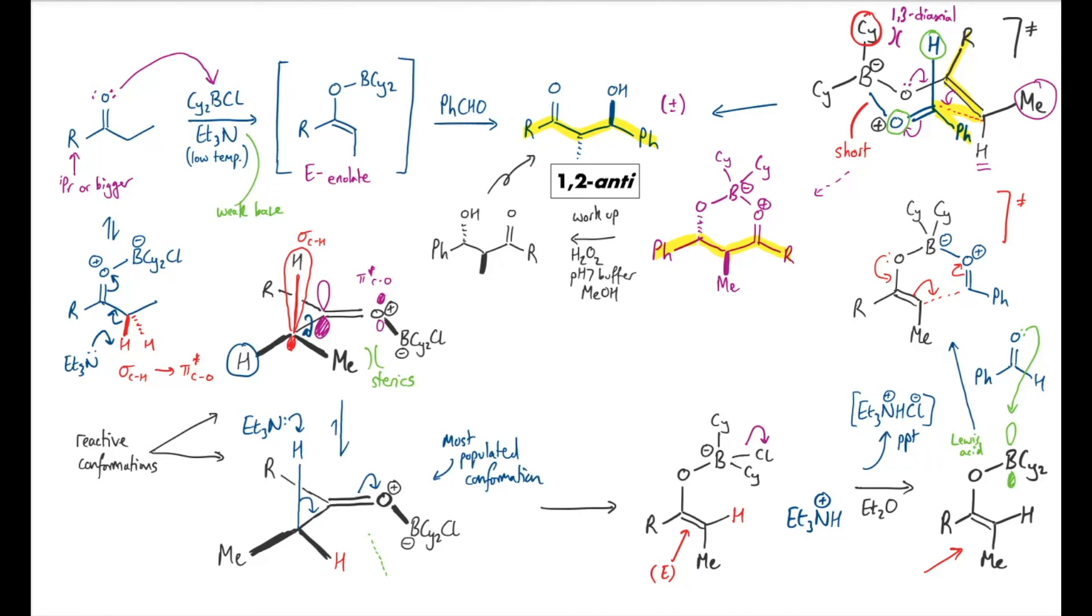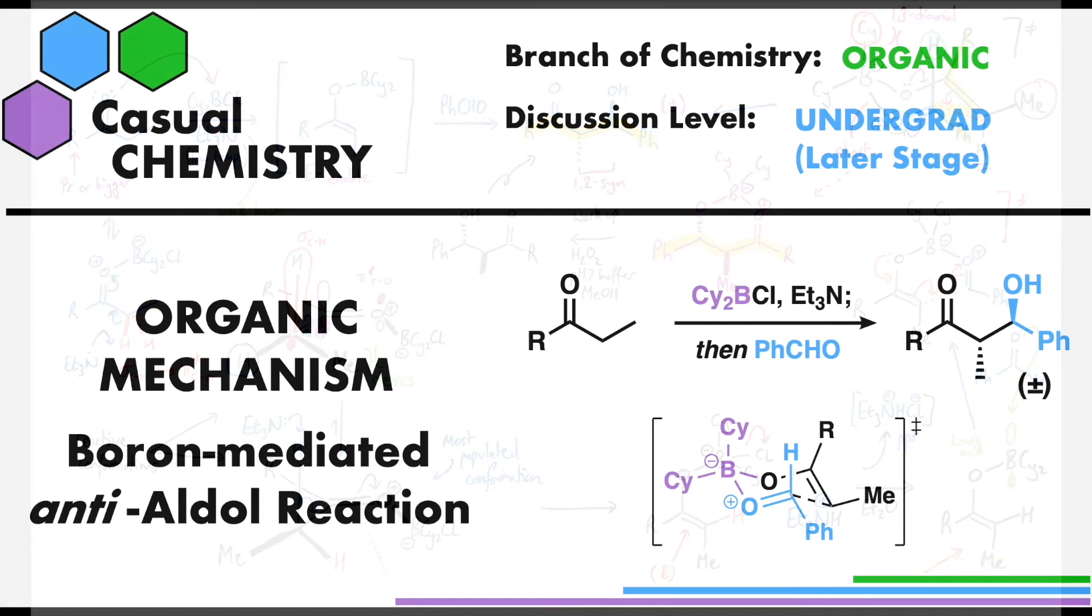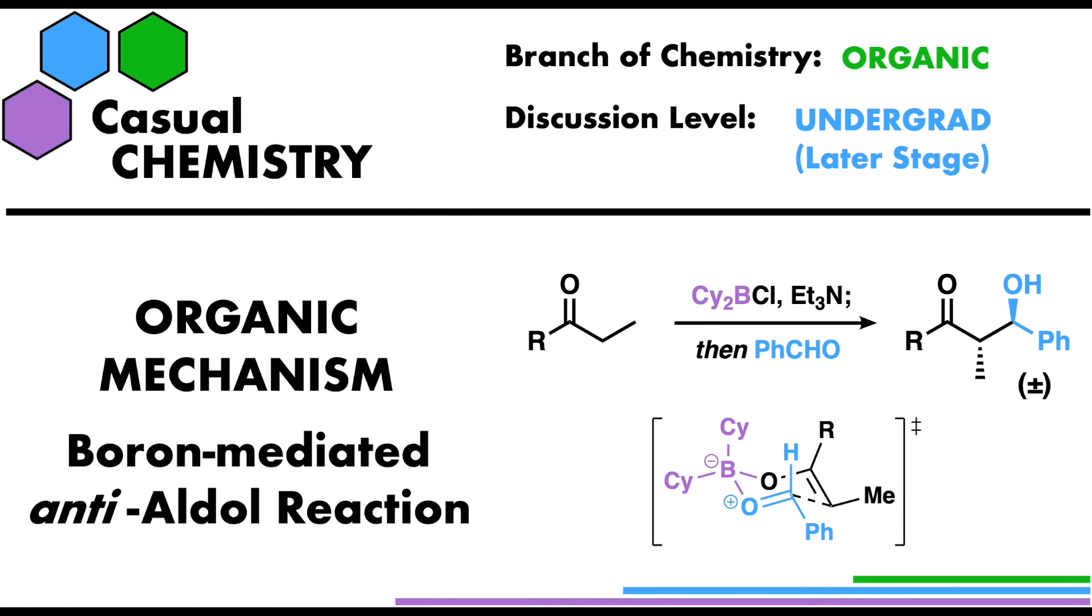So as ever with a diastereoselective transformation, being on top of your 3D drawing and using different models is key for success. And here we've used one carbon-carbon bond forming reaction to set two stereocenters at once. Okay, that's me done for today. If you enjoyed the video, do give it a like and consider subscribing to my channel. I intend to make some synthesis videos using this transformation in the future. So do keep an eye out for those.